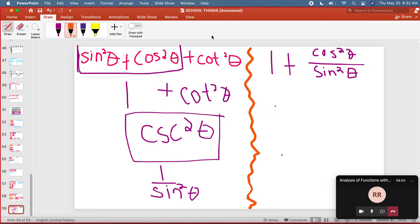So we already changed this part, sine squared theta plus cosine squared theta turned into one, right? And then the next thing that I did was I changed cotangent squared theta into cosine squared theta over sine squared theta. Okay? Because that's most of you guys's instinct, right?